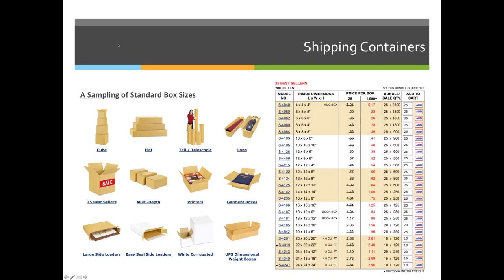Your extra credit assignment this week will be to identify different types of boxes. The screen caps on your screen right now come from Uline.com — that's U-L-I-N-E.com. It is an industry standard website for purchasing bulk goods, kind of like OfficeDepot.com. If I needed to buy boxes or pens working in the industry, I would buy them at Uline because I can buy them in huge loads.